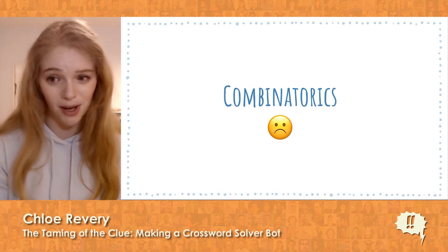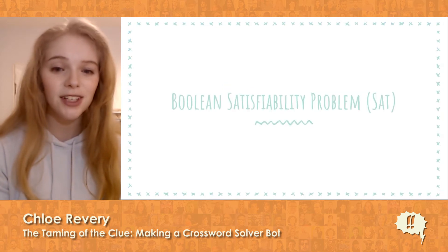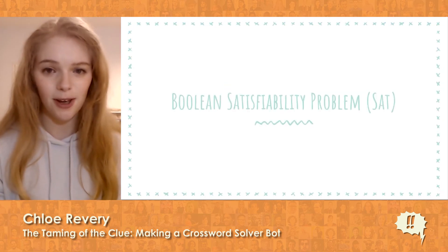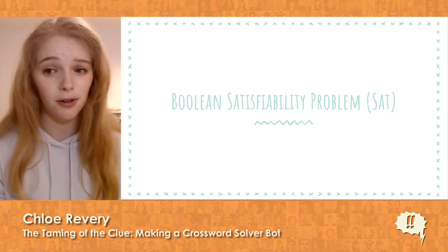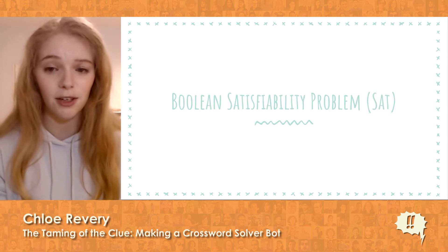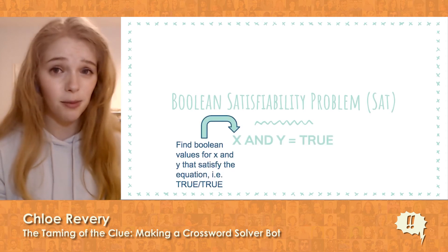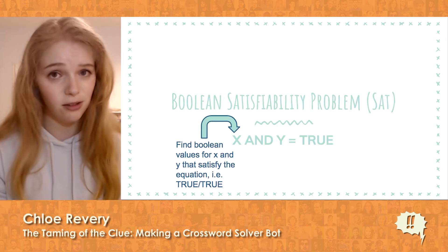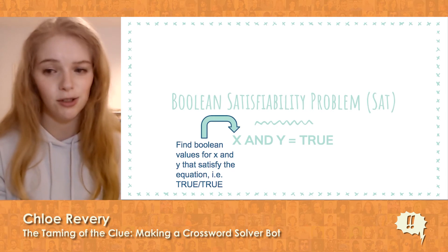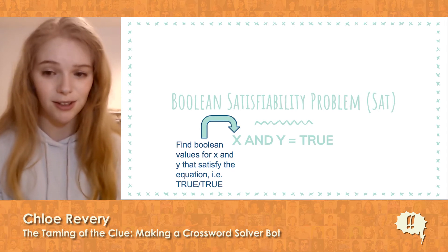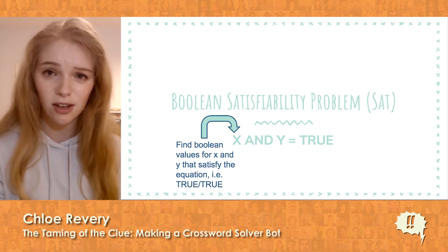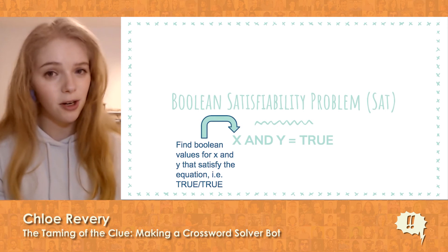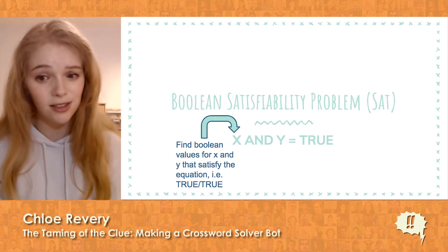Luckily, people who are really good at math have been working on this problem for decades. They've even given it a name: the Boolean satisfiability problem. This is a class of problems in which the goal is to find an assignment for a large number of variables such that an overall formula evaluates to true. The formula can be as simple as 'x and y equals true.' The satisfiability problem in this case is to find Boolean values — true or false — for x and y that make the equation true. Once you express a problem as a Boolean equation, you can run it through a SAT solver for satisfiability, an algorithm designed to solve this class of problems.